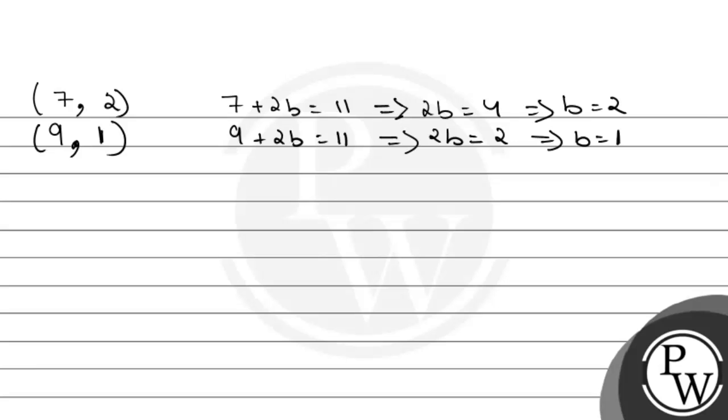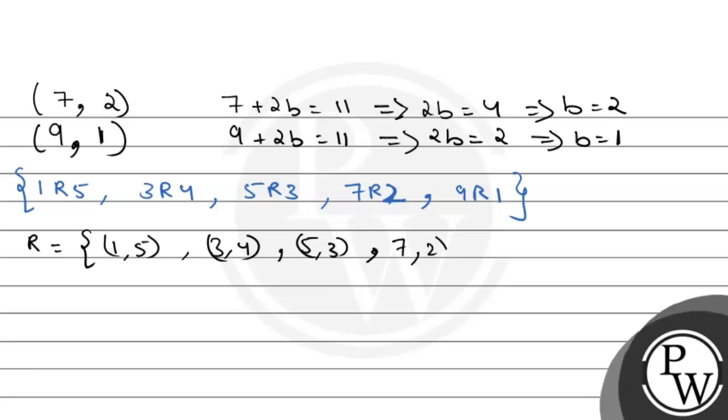From this we get the relations that satisfy our conditions: 1 R 5, 3 R 4, 5 R 3, 7 R 2, and 9 R 1. These are the ordered pairs. So our relation R from this is R equals {(1,5), (3,4), (5,3), (7,2), (9,1)}.